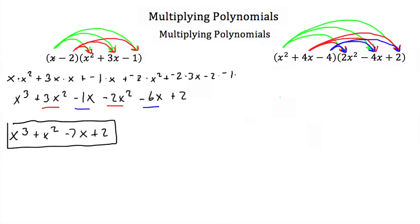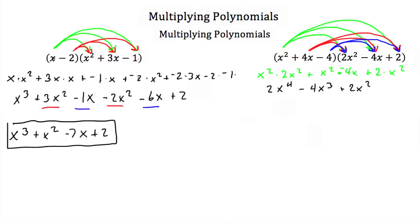Starting with x squared: x squared times 2x squared is 2x to the fourth. x squared times negative 4x is minus 4x cubed. And 2 times x squared is 2x squared. Then for 4x: 4x times 2x squared is 8x cubed. 4x times negative 4x is negative 16x squared. And 4x times 2 is 8x.